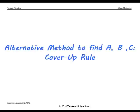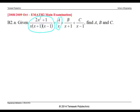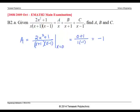Another way to solve for a, b, c is to use the cover-up rule. To find a, we cover up the term that appears below a in the larger fraction. So a equals 2x squared plus 1 over (x plus 1)(x minus 1). Since we covered x, we set x to zero and substitute to get the value of a.